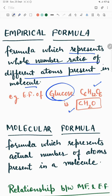So, empirical formula is CH2O and molecular formula is C6H12O6 in case of glucose.